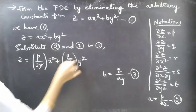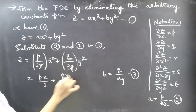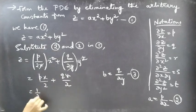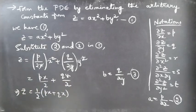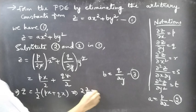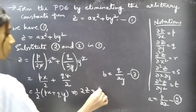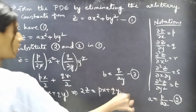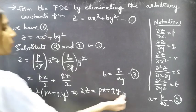Substituting, we get z = (p/2x)·x² + (q/2y)·y². Cancelling one x and one y gives z = px/2 + qy/2, or z = (1/2)(px + qy). Bringing the 1/2 to the left-hand side gives 2z = px + qy, which is the required partial differential equation. It does not involve any arbitrary constants.